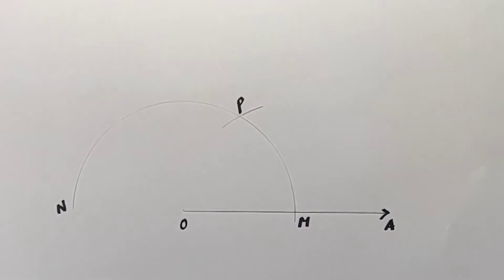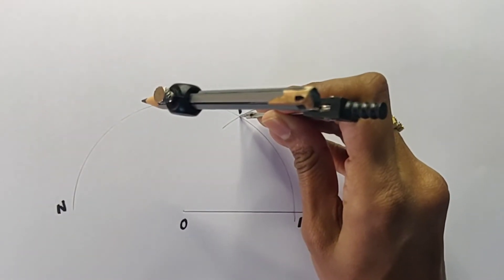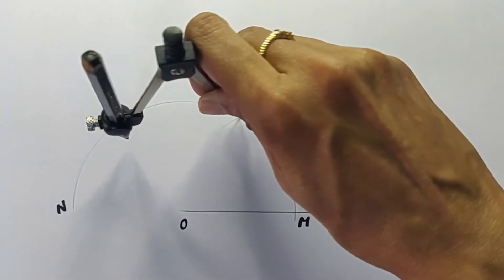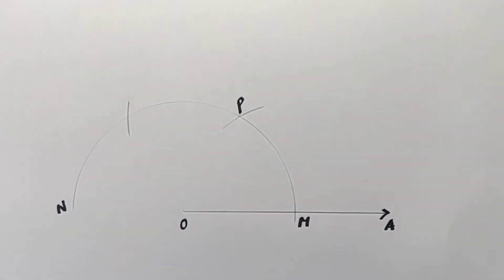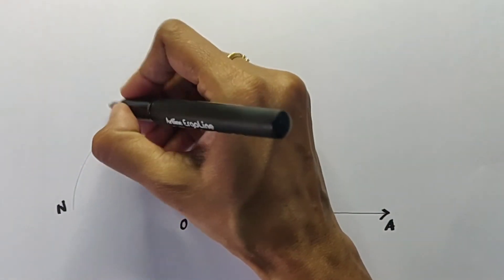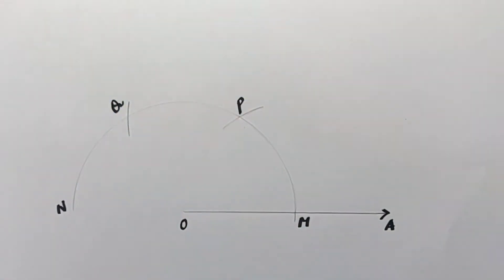Now, with the same radius, with P as center, draw an arc cutting the previously drawn arc at point Q. Let's label this point of intersection as point Q.